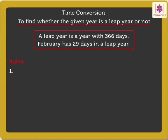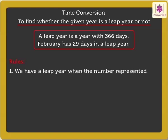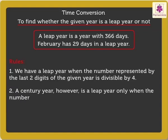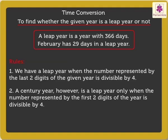Rule 1: We have a leap year when the number represented by the last two digits of the given year is divisible by 4. Rule 2: A century year, however, is a leap year only when the number represented by the first two digits of the year is divisible by 4.